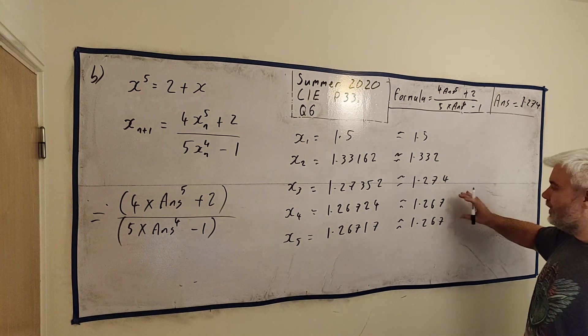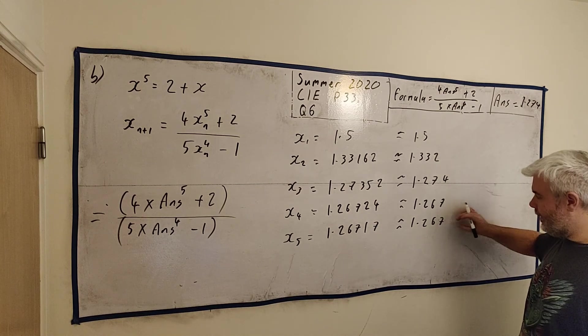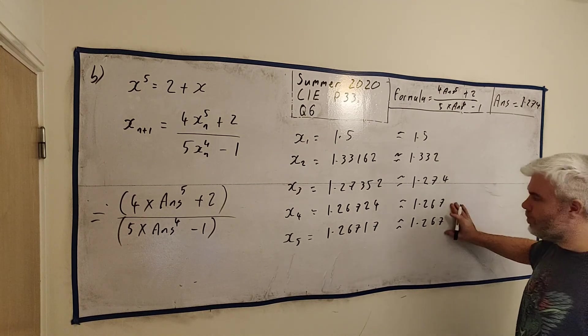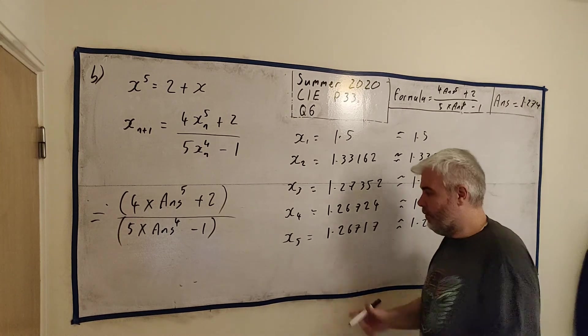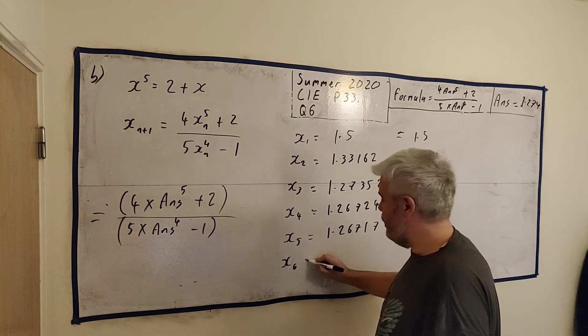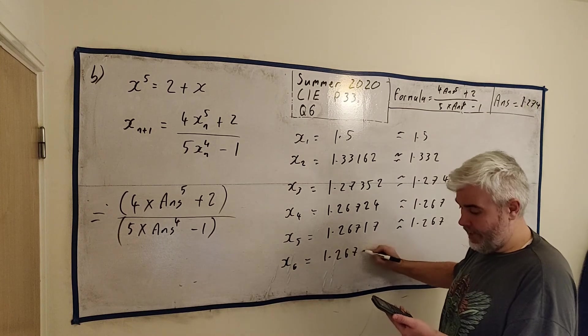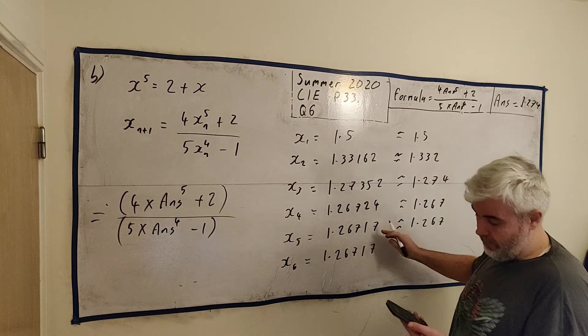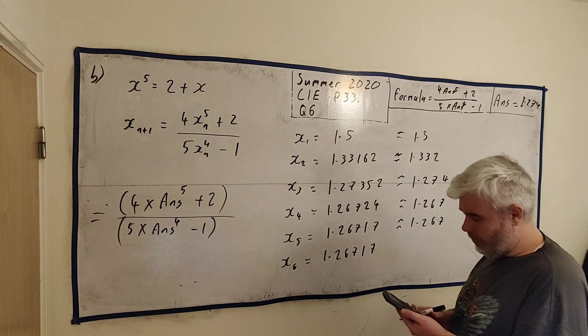That's good enough for the examiner, that we're quite sure now, that this is the correct answer, it's converged to here. You could go ahead, if you want, just do another one, see what happens. 1.26717, yeah, it's in fact, converged again.